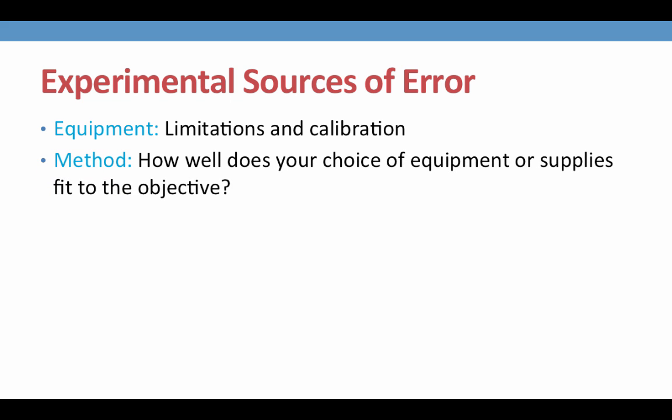Another source of error is the method. This means, how did you go about doing the experiment? Did you choose equipment and supplies that will fit the objective and give the highest amount of precision possible? Did you choose to use an analytical balance rather than the pan balance? Did you choose a sample that is stable, or one that is going to evaporate on you, or absorb water, meaning a hygroscopic sample? These considerations need to be taken into account when designing an experiment.